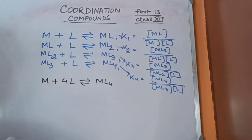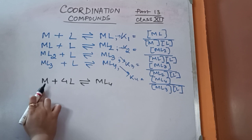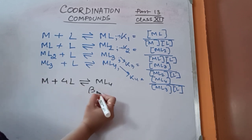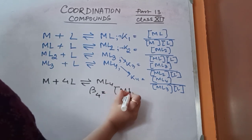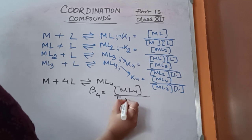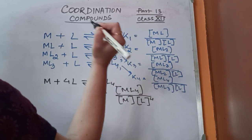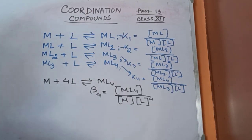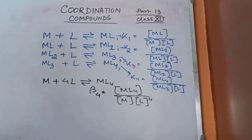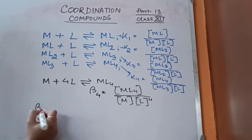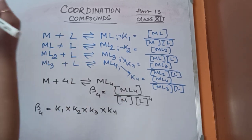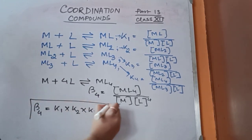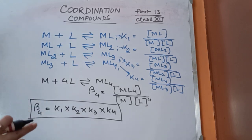Alternatively, we can directly form ML₄ by reacting 4 moles of ligand with the metal in one step. This has an overall stability constant denoted beta₄, where beta₄ = [ML₄] / ([M][L]⁴). The relationship between the overall and stepwise stability constants is: beta₄ = K₁ × K₂ × K₃ × K₄.